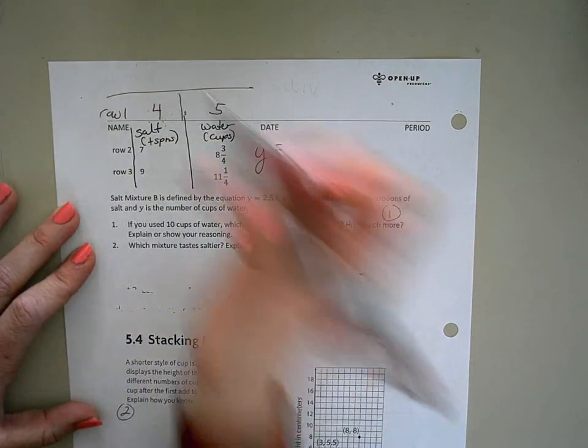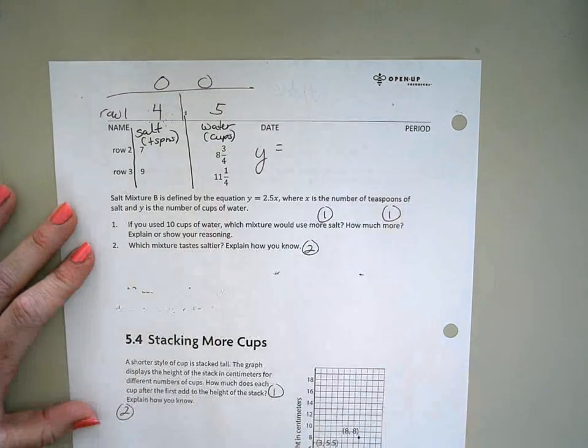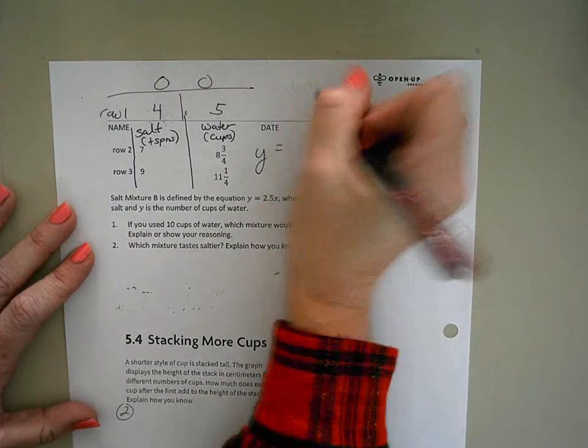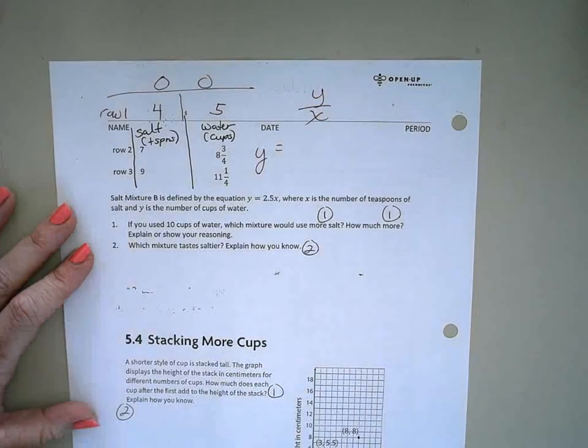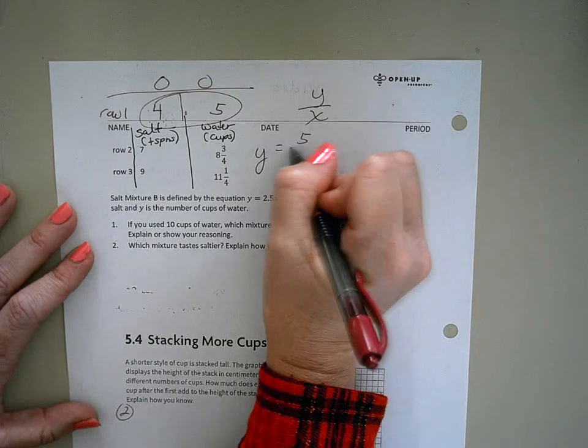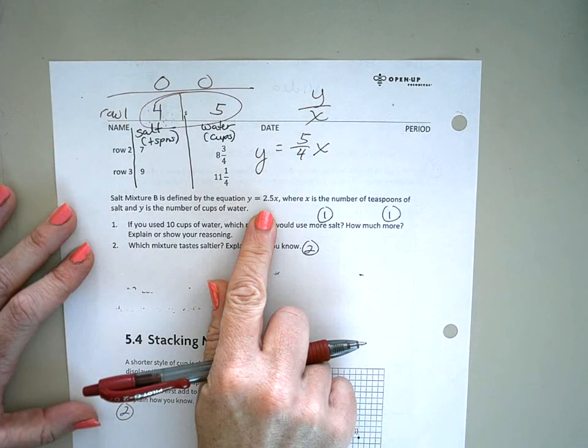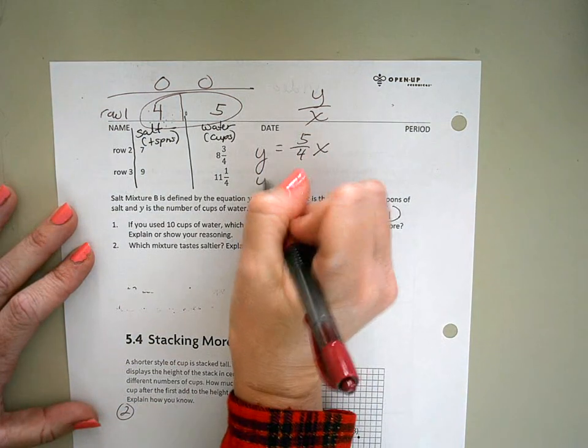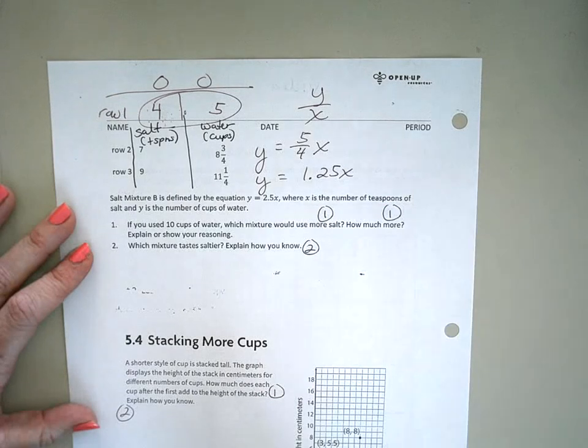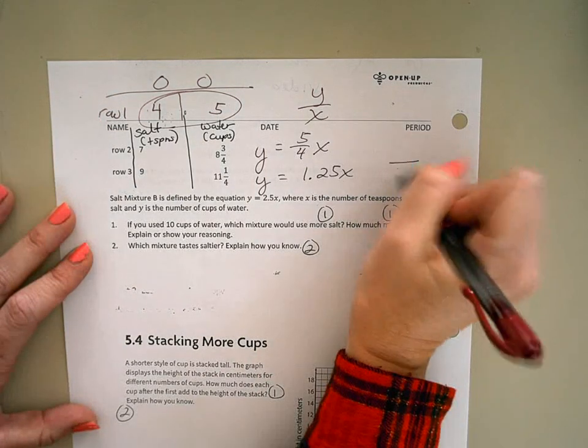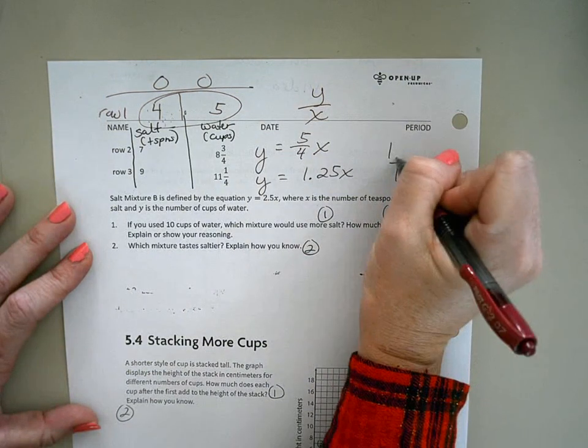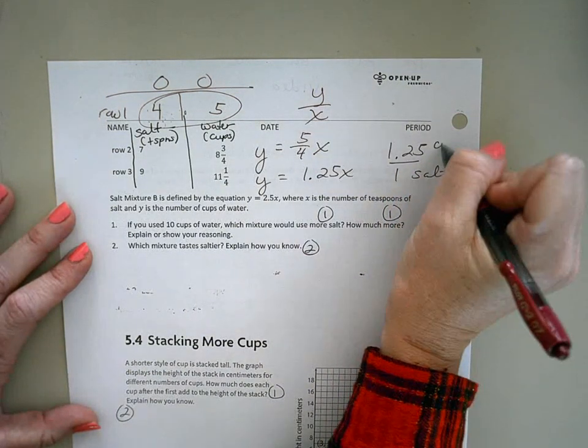Obviously, in this situation too, if we have no salt, we're also not going to have any water, which means it's a proportional relationship. So our equation is just going to be Y divided by X. So we have five-fourths X, which, since I noticed this is written as a decimal, that means 1.25X, which means for every one teaspoon of salt, we're going to use 1.25 cups of water.